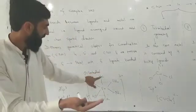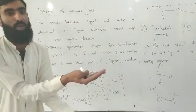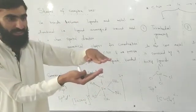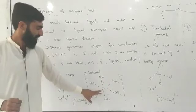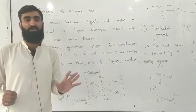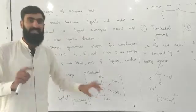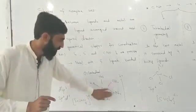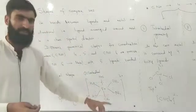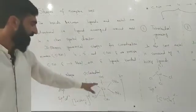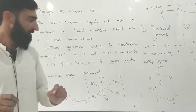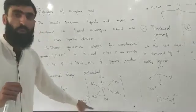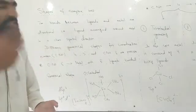In octahedral geometry, four ligands are in one plane and one ligand is above and one ligand is below that plane — so it is a square planar arrangement with one above and one below. Octahedral geometry is a three-dimensional geometry, not two-dimensional. For example, iron complexes commonly show octahedral geometry, such as [Fe(H2O)6] with a 3- charge.